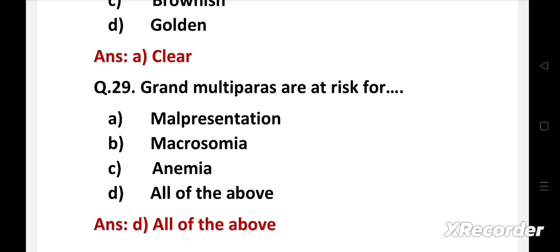Right answer is option D: all of the above. Grand multiparity is a high risk for adverse maternal outcomes during pregnancy and childbirth. This includes malpresentation, anemia, macrosomia, postpartum hemorrhage, high perinatal mortality rate, etc.